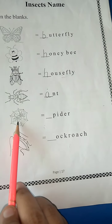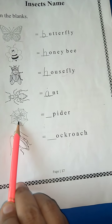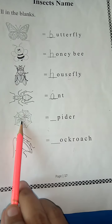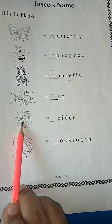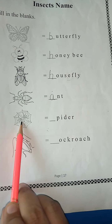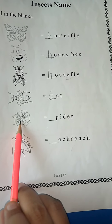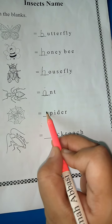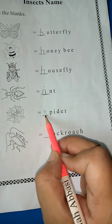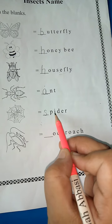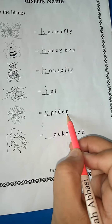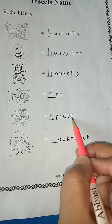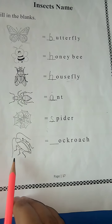So next is spider. Spider. Whose sound do we hear? Yes, this is S. So write S. S-P-I-D-E-R. Spider.